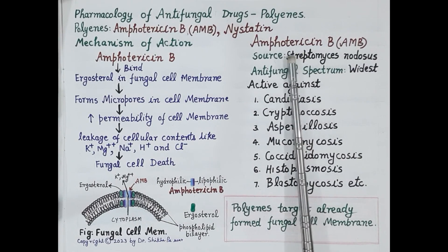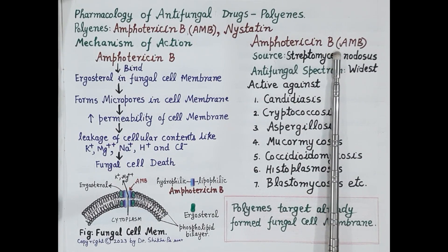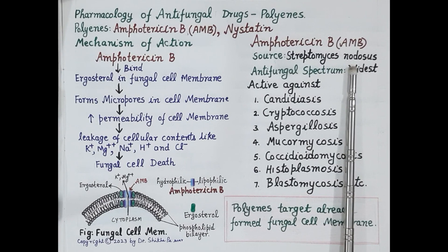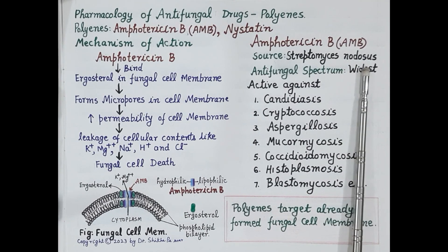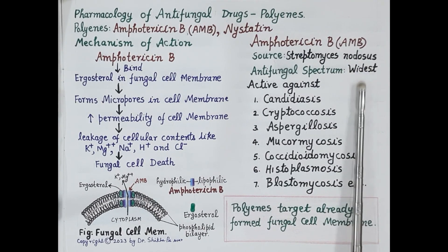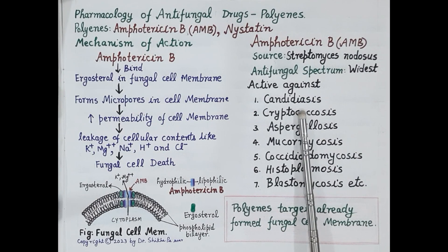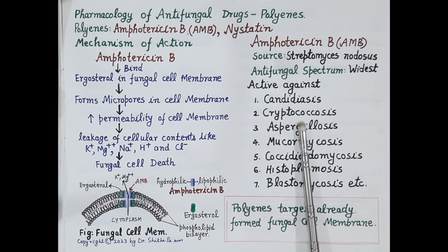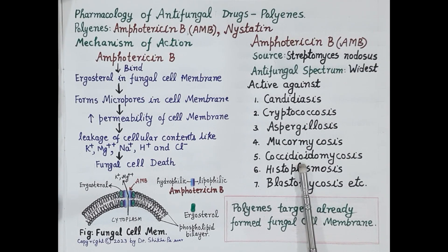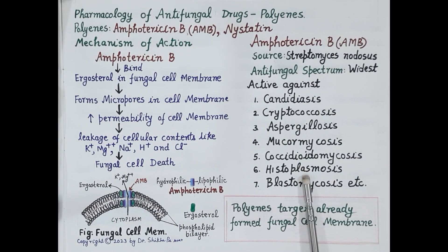Now let's discuss the pharmacology of amphotericin B. Amphotericin B is obtained from the bacterium Streptomyces nodosus. It has the widest antifungal spectrum amongst all antifungal drugs, being active against a wide range of fungi including candidiasis, cryptococcus, aspergillosis, mucormycosis, coccidioidomycosis, histoplasmosis, blastomycosis, and others.